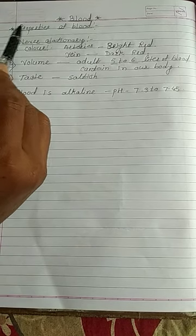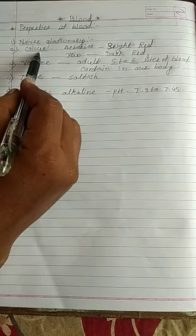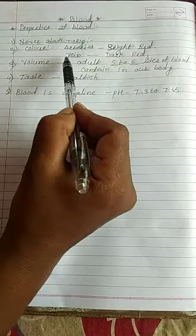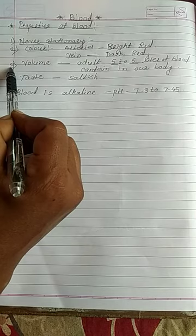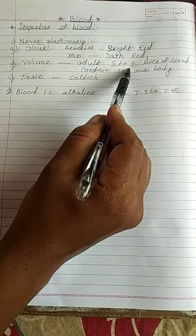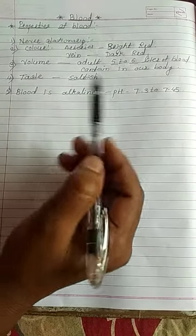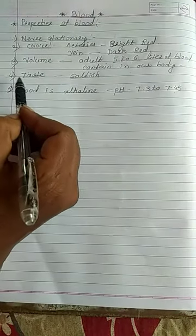To recap the properties of blood: first, blood is never stationary — it is always in motion, moving from body parts to the heart and back. Second, color — when blood is in the arteries it is bright red, and when in the veins it is dark red. Third, in adults 5 to 6 liters of blood is necessary. Fourth, taste — blood has a saltish taste because it contains sodium chloride. Fifth, blood is alkaline in nature with a pH of 7.3 to 7.45.